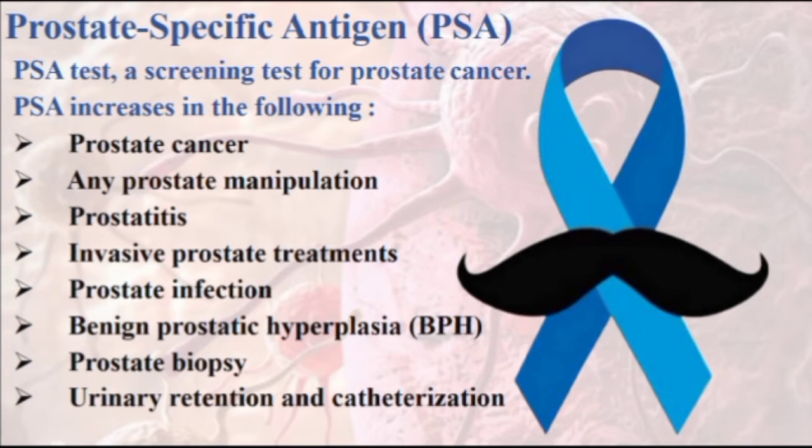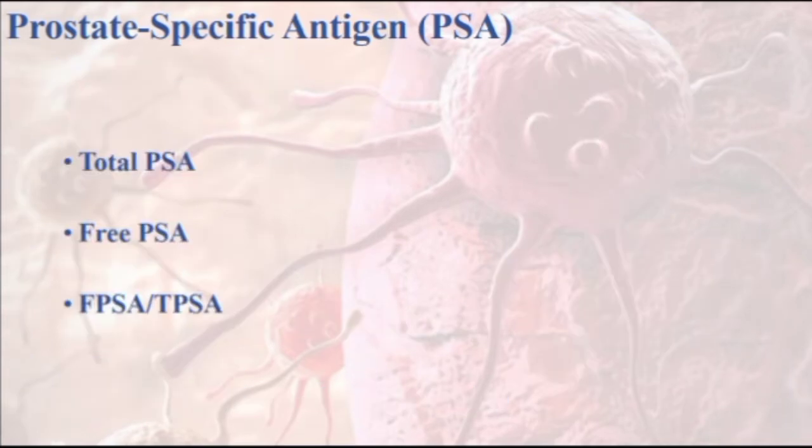In addition to prostate cancer, several benign or non-cancerous conditions can cause a person's PSA level to rise, including any prostate manipulation, prostatitis or inflammation of the prostate, invasive prostate treatments, prostate infection, benign prostatic hyperplasia, prostate biopsy, urinary retention, and catheterization. There are two forms of PSA in the blood: the complex form of PSA which binds to various proteins, and the free or unbound form called free PSA.